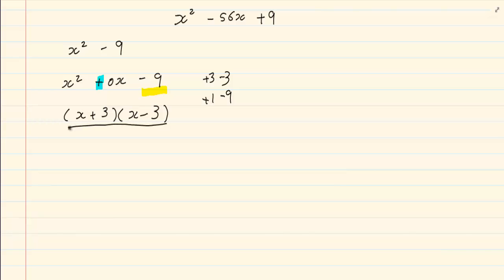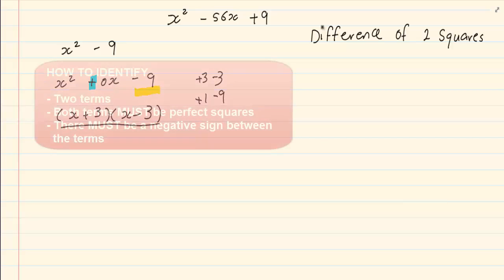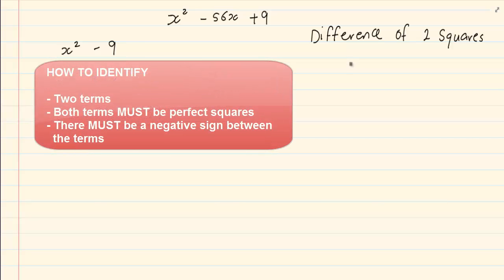This would be using your trinomial methods. Now there is a short way to do this. We are going to use a method where we call it difference of two squares. Now the answer lies in the question. Number one, x squared is a perfect square and 9 is a perfect square. Difference means negative. So it is the difference, so it is the subtraction of two squares.